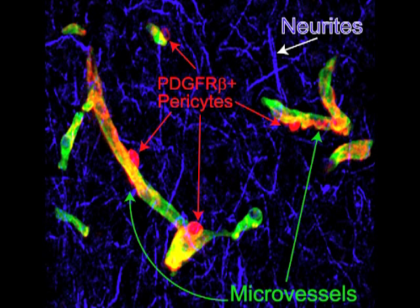Mouse lines that we use in these studies express PDGFR-beta exclusively on pericytes and not on other cell types in the CNS.